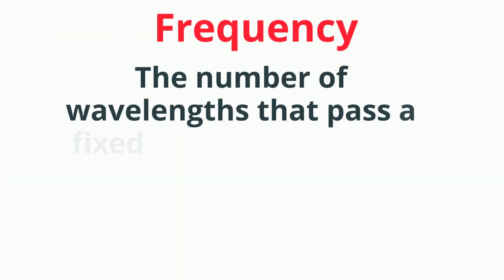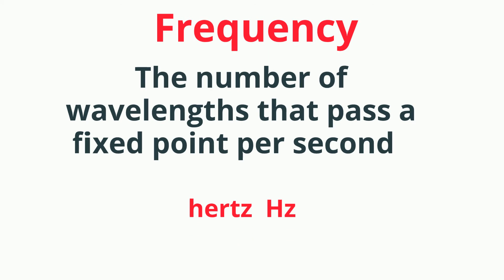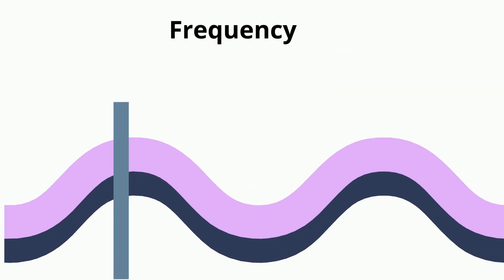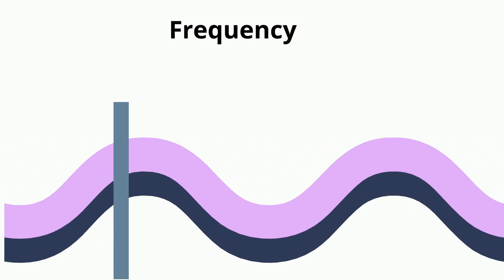Frequency is the number of waves that pass a fixed point each second, and it is measured in Hertz. For a transverse wave, you can count the number of crests or troughs that pass a certain point. A shorter wavelength will result in a higher frequency than a longer wavelength.